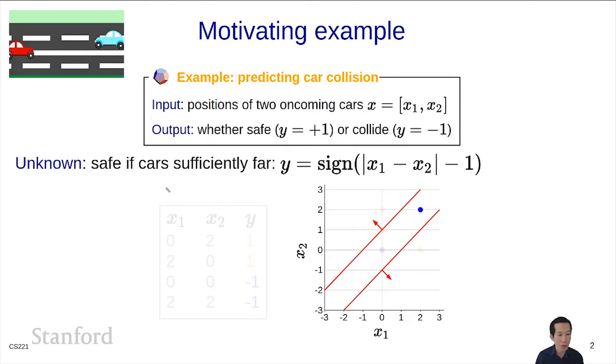Let's do some examples. Suppose we have (0,2), which is this point here. This is safe, so y equals 1. (2,0) is also safe. (0,0) is here, which is not safe, and (2,2) is minus 1, also not safe.